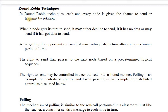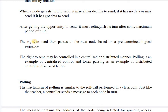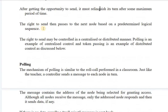In Round Robin technique, all nodes get an equal chance to send data in rotation. When a node gets its turn, it may decline if it has no data, or send if it does. After its opportunity, it must relinquish its turn after a maximum period and wait for the next turn. The right to send passes to the next node in a predetermined logical sequence — usually clockwise. This right can be controlled by a centralized or distributed manner.